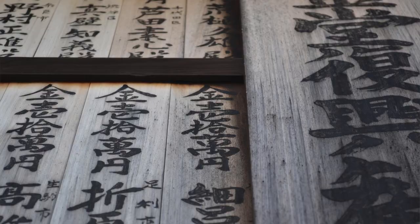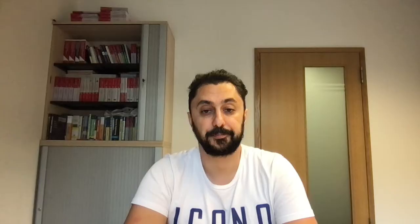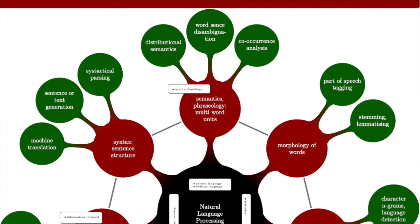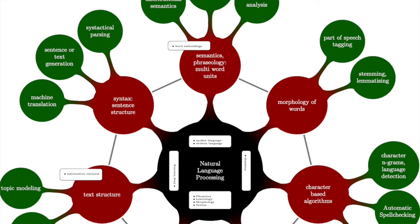Our next subfield is called natural language processing, also known as NLP. NLP deals with the digital processing of languages such as English, German, French, Spanish, Arabic, Chinese, and many others spoken around the globe. The focus is on how computers can best understand spoken and written language. Areas of application are diverse. For example, today we can use tools such as Siri or Amazon Alexa to issue a voice command to our cell phones or computers and control them.